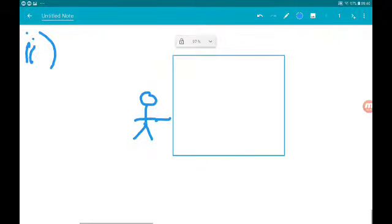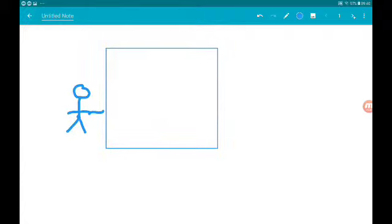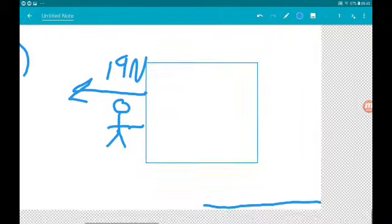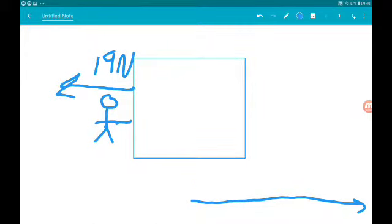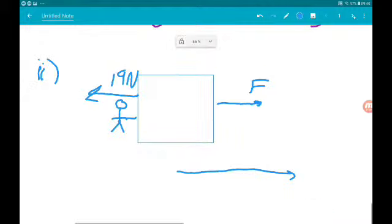There we go, there's Rory pushing the box. We know that the box is moving overall. We know that there is a resistant force of 19 newtons and let's call the force that Rory applies f.